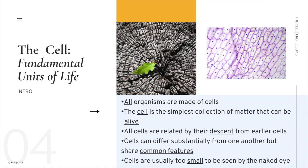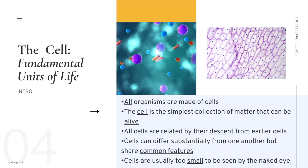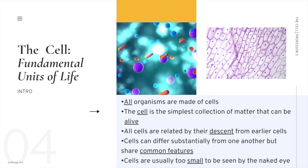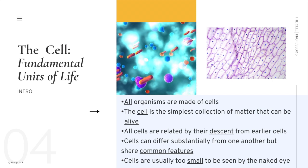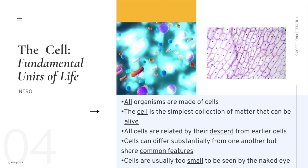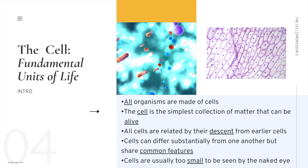This is an important lecture. We learned in the first lecture that the fundamental unit of life is the cell. Everything else below this level of hierarchy is not considered to be alive or have life, making the cell the simplest collection of matter that can be alive. The cell is where all the magic happens and every living organism is made of either one or many cells. All cells are related by their descent from earlier cells.